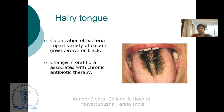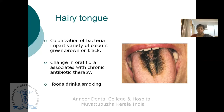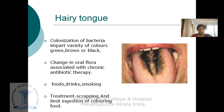Hairy tongue may occur due to a change in the oral flora from antibiotic therapy, or due to food and drinks such as coffee or tea and smoking. Treatment involves scraping the dorsum of the tongue, limiting ingestion of coloring food, brushing the tongue, and keeping it clean.